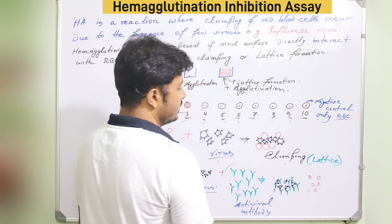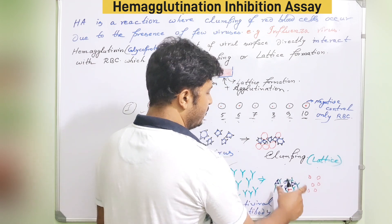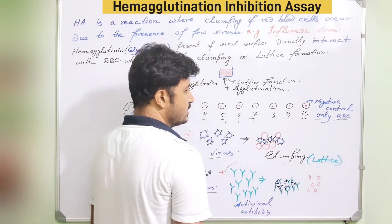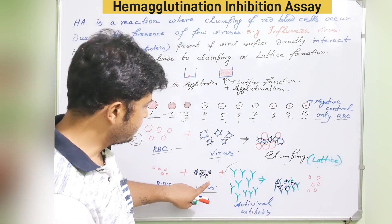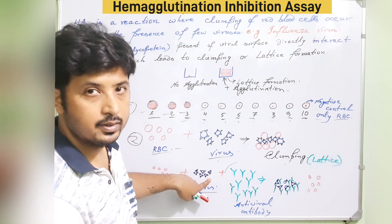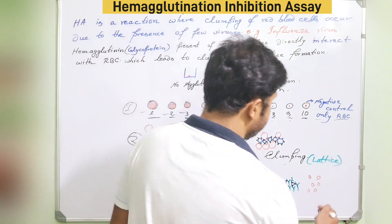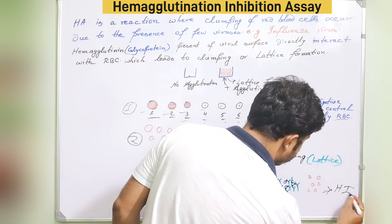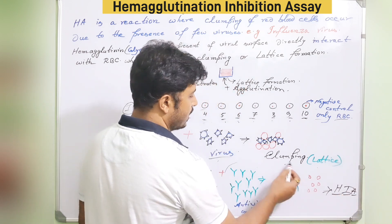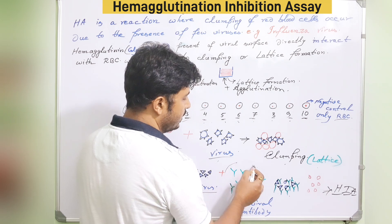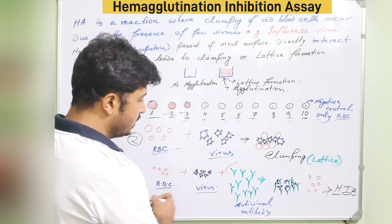When antigen and antibody bind, the RBCs are left untouched — no virus can interact with the RBCs because the hemagglutinin particles are already bound by antibodies. So no hemagglutination occurs. This is the hemagglutination inhibition assay: the hemagglutination process is inhibited due to antiviral antibodies present in the patient's diluted serum.